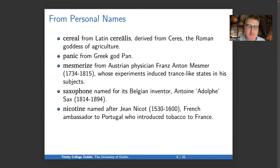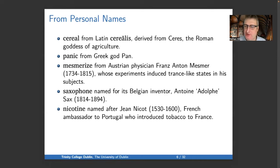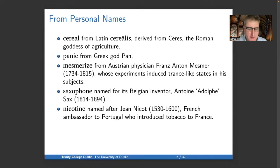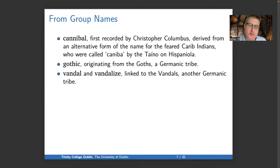Now, words that come from personal names. 'Cereal,' like breakfast cereal, comes from Latin cerealis, which derives from Ceres, the Roman goddess of agriculture. 'Panic' comes from the Greek god Pan. 'Mesmerize' comes from Austrian physician Franz Anton Mesmer (1734–1815), whose experiments induced trance-like states in his subjects. 'Saxophone' is named after Belgian inventor Antoine (also called Adolf) Saxe (1814–1894). And 'nicotine' is named after Jean Nicot (1530–1600), the French ambassador to Portugal, who first introduced tobacco into France.